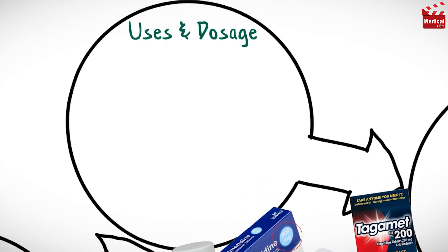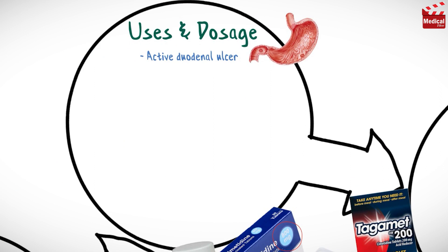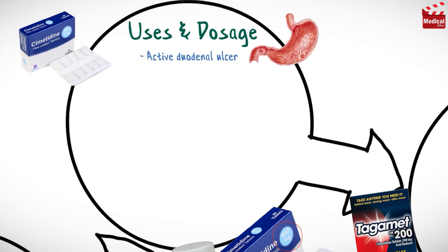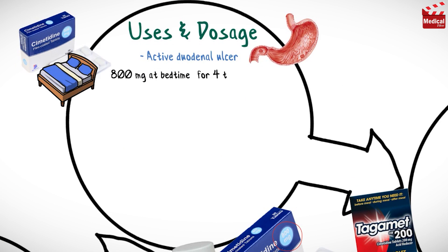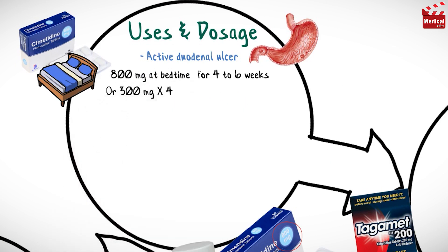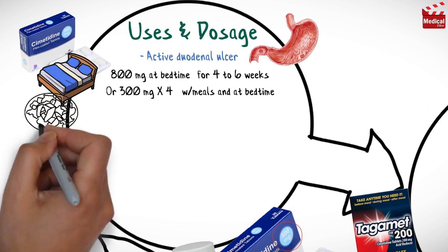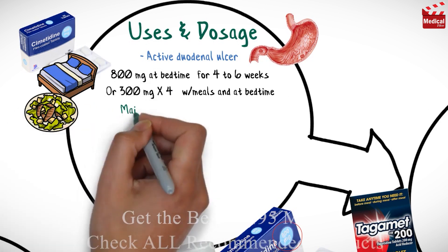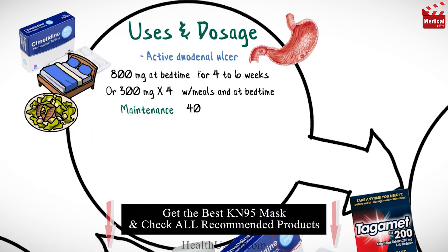Cimetidine is used in the treatment of active duodenal ulcer. The usual dose for adults is 800 mg at bedtime for 4 to 6 weeks, or 300 mg 4 times per day with meals and at bedtime. The maintenance dose is 400 mg at bedtime.